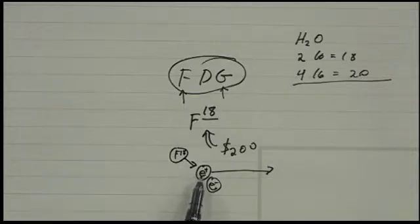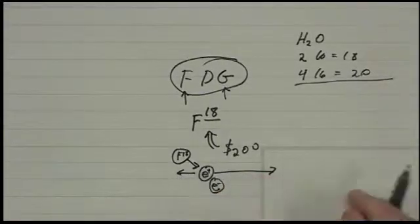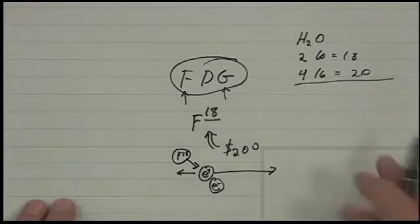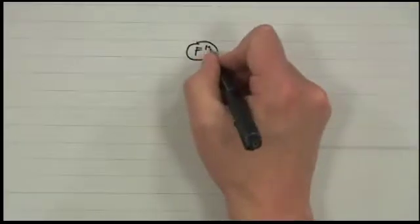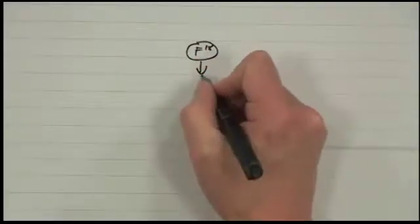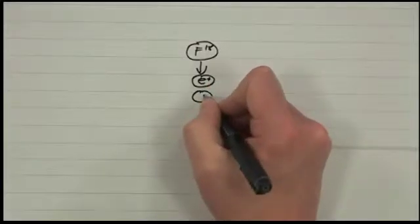The electron and positron are antiparticles, so they annihilate. And when they annihilate, I'm not drawing this exactly right. Okay. Let me redraw this, because the physics of that was wrong. Okay. So this is F18. The F18 produces a positron. The positron annihilates with an electron.